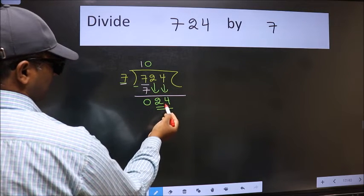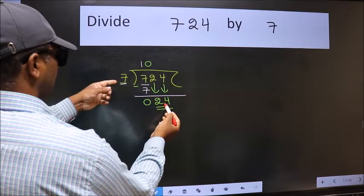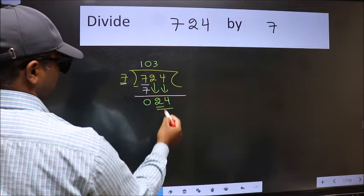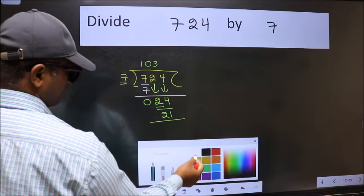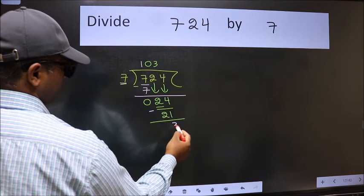Now 24. A number close to 24 in the 7 table is 7 threes, 21. Now we should subtract. We get 3.